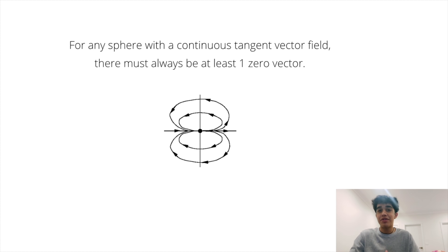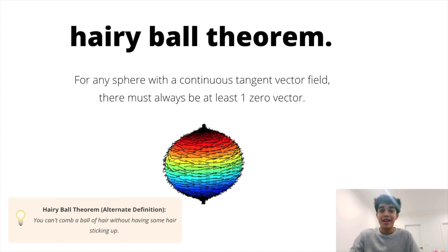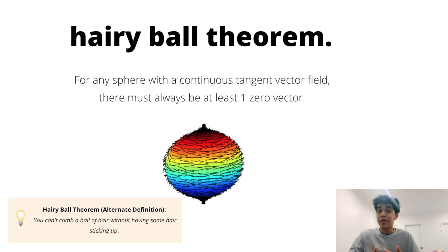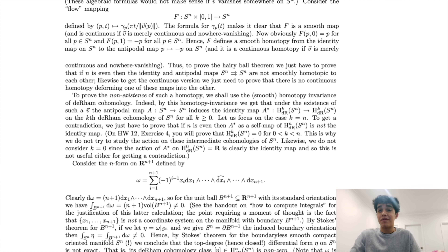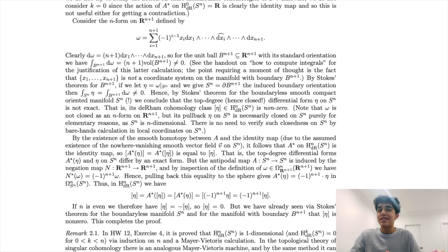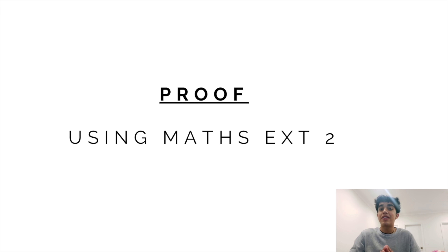This is officially known as the Hairy Ball Theorem. The theorem proposes that you can't comb a ball of hair without having some hair sticking up. Since wind on Earth is like a projection of hair on a ball, this implies there is always a place with no wind. While the actual proof is beyond the scope of this course, we can simplify it using a method from our nature of proof topic, which beautifully integrates Euler's characteristic and the Poincaré-Hopf theorem.